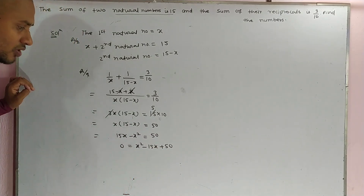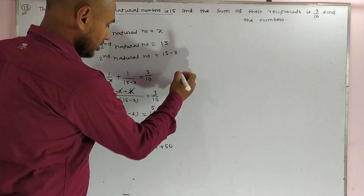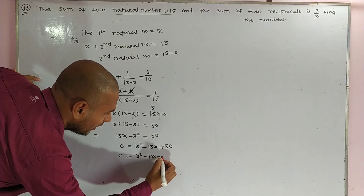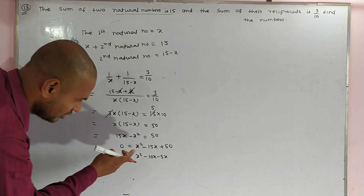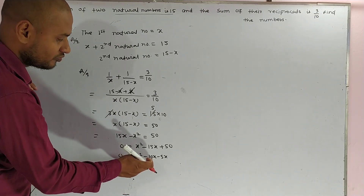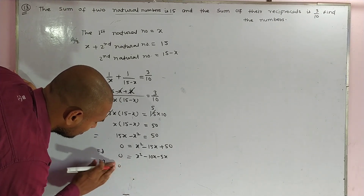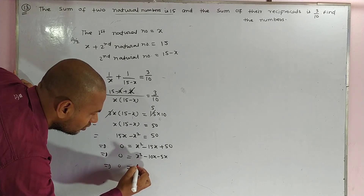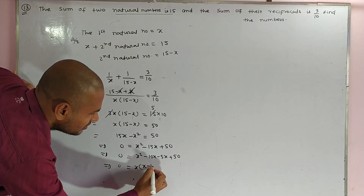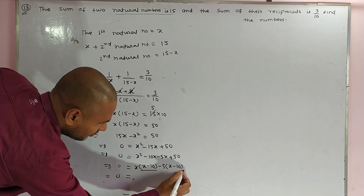To factor this, we split the middle term minus 15x into minus 10x minus 5x, since minus 10x minus 5x equals minus 15x and minus 10 times minus 5 equals plus 50. So we have x² minus 10x minus 5x plus 50 equals 0. Taking x common from the first two terms gives x(x minus 10), and taking minus 5 common from the last two gives minus 5(x minus 10).